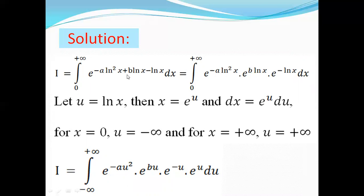Here we will distribute the powers over e, so I becomes the integral from 0 to plus infinity of e to the power minus a·ln²(x), multiplied by e to the power b·ln(x), multiplied by e to the power minus ln(x), all dx.